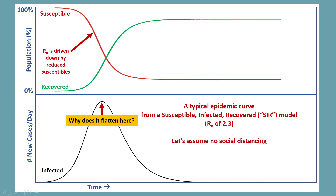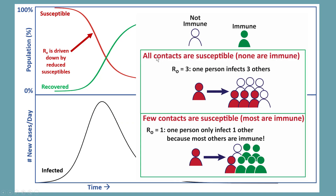The reason is, if everyone is susceptible and no one is immune, and you have an R0 of 3, everyone infects 3 others. But when people start becoming immune — in other words, they become recovered and develop immunity — if you have a situation where there are few susceptible contacts and most people are immune, you will have an R0 that may be 1, where one person infects one. Or you get to a situation where there are so many immune people that R0 goes down below 1 and the epidemic ends.